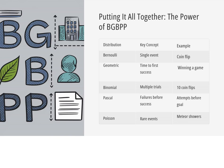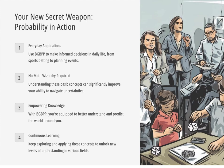So we've got Bernoulli for single events, geometric for time to first success, binomial for multiple trials, Pascal for failures before success, and Poisson for those rare event scenarios. And our trusty BGBPP acronym keeps it all straight. This deep dive has been amazing — it's like we've unlocked a whole new level of understanding the world around us. And the best part is you don't have to be a math whiz to use these concepts. Just understanding the basics can help you make more informed decisions every day. So next time you're placing a bet on a game or reading about earthquakes, remember: BGBPP. It's your secret weapon for navigating the world of probability.